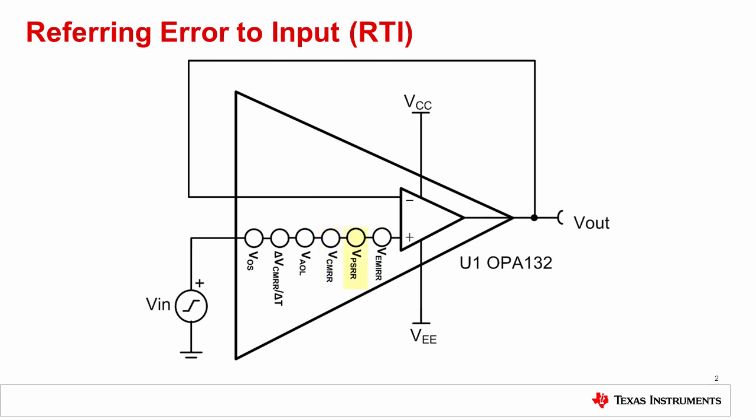Errors from common mode rejection, power supply rejection, open loop gain, and many other types of errors can be modeled as input offset voltage connected to the non-inverting input of the op-amp. This method of reflecting the error signal to the input simplifies the error analysis as error sources can be added to find the total error.